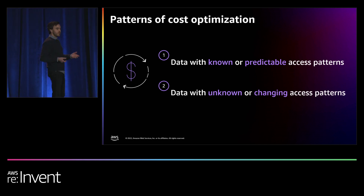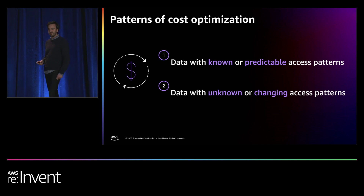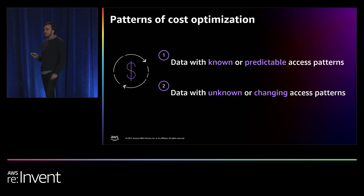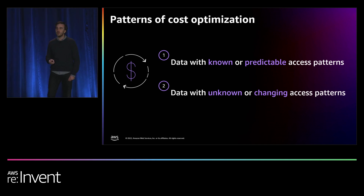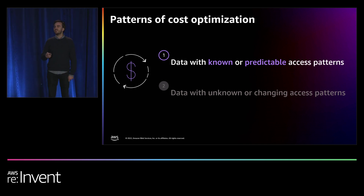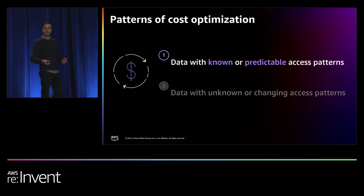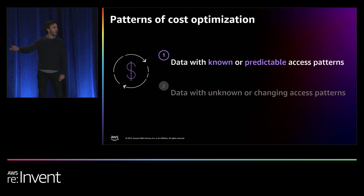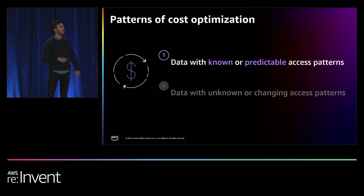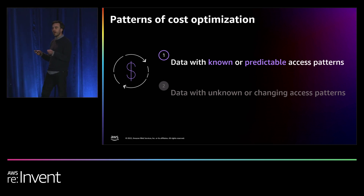Now that we've talked about tools to identify trends, let's talk about storage classes. Storage classes are how you store your data in S3 and are optimized for specific access patterns. Before choosing a storage class, it's important to identify whether you have data with known or predictable access patterns or data with unknown, changing, or unpredictable access patterns. For data with known or predictable access patterns, such as data that becomes infrequently accessed after a definitive period of time, like user-generated photos and videos that are frequently accessed right after upload but become infrequently accessed after a few weeks, customers can pinpoint the right time to move data to a cost-optimized storage class.